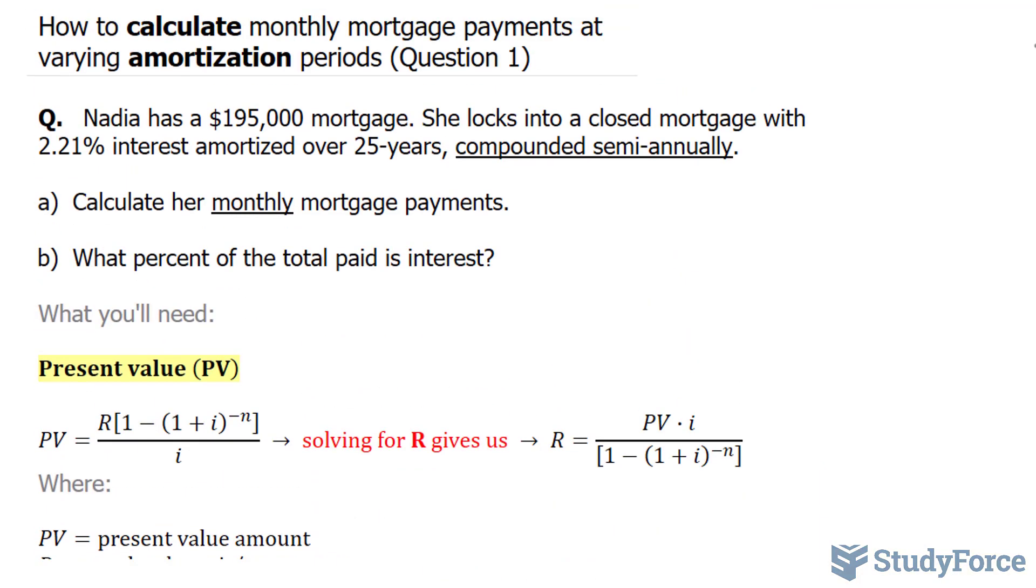So let's write down everything we know so far. We know that the present value, PV, is equal to $195,000. And we're also told that she will be paying for the next 25 years. And specifically, they want us to find out her monthly mortgage payment. So the n value here will be 25 times 12, 25 being the number of years that she's going to have this mortgage, and 12 being the amount of months in a year. And this equals 300.